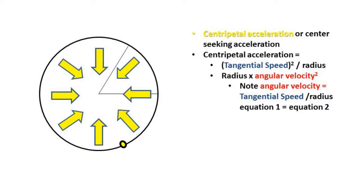Centripetal acceleration can be found by squaring the velocity and dividing by the radius, or by taking the radius and multiplying by the angular velocity squared. Looking at the second equation, we can see that angular velocity equals tangential speed over the radius. Once we substitute tangential speed over the radius into equation two, we can see that equation one equals equation two.